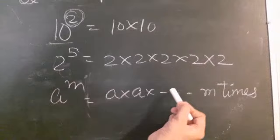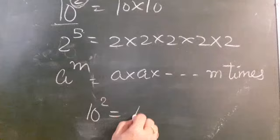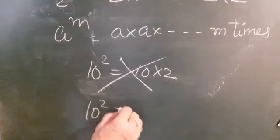An important clarification: 10 raised to power 2 does not mean you multiply 10 into 2 — that would be wrong. 10 raised to power 2 means 10 is multiplied 2 times, giving 100.